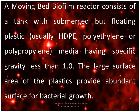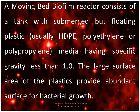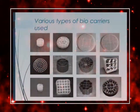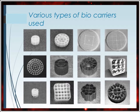A moving bed biofilm reactor consists of a tank with submerged but floating plastic media having a specific gravity less than 1, as seen earlier in the schematic diagram. The large surface area of the plastic provides abundant surface for bacterial growth. These are images of various types of biocarrier used in MBBR tanks. Because of these structures, the biofilm attaches and provides higher surface area in a lower space.